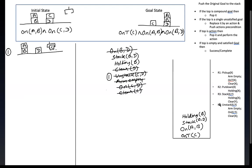Now the top of the stack is holding b. Is the arm holding b? No — the arm is holding c, not b. So this condition is not satisfied. We pop it and put the action and preconditions for achieving holding b. To hold b, we need a pick-up action, since we are currently holding c and not b.